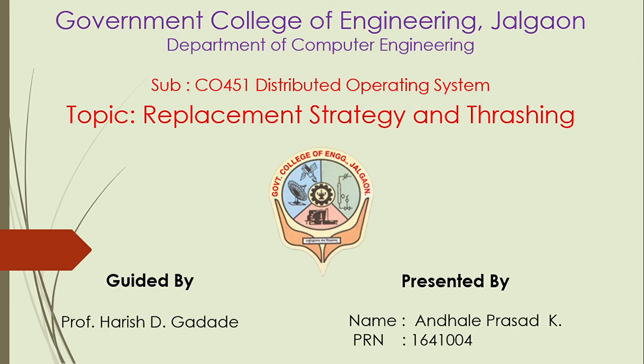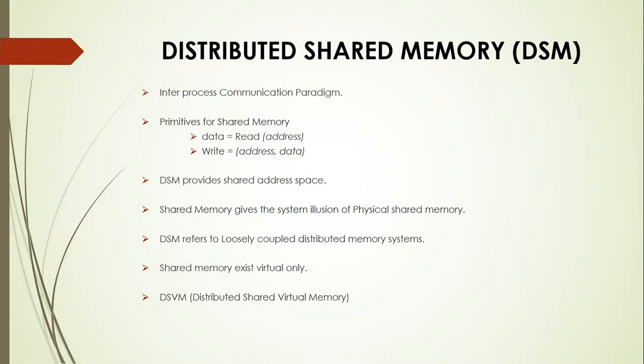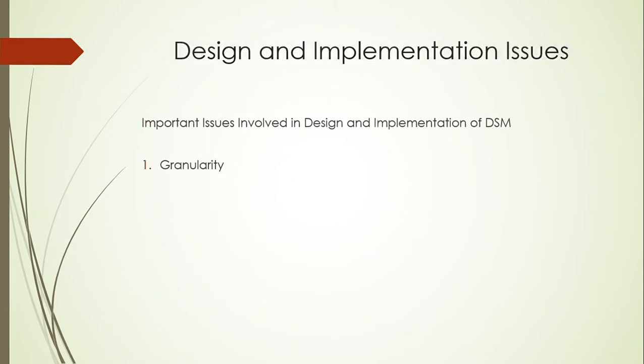Welcome. This is a presentation on replacement strategy and thrashing. Before going to that topic, we first understand Distributed Shared Memory (DSM). It is an inter-process communication paradigm — a shared memory paradigm. It has two primitives: read, which returns the data item referred to by address, and write, which saves the content referred to by address. DSM provides a shared address space, giving the system the illusion of physical shared memory. It is referred to as distributed shared virtual memory due to its virtual nature.